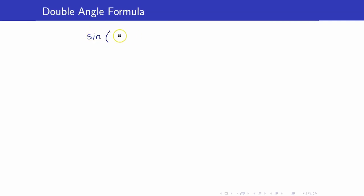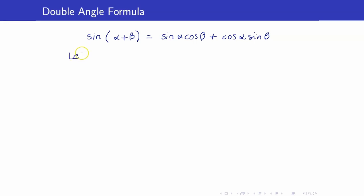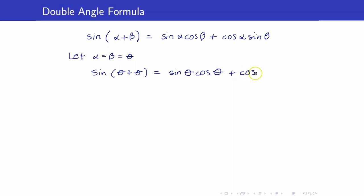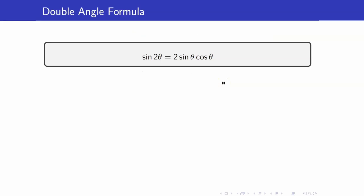Let us first recall our sum and difference identities for sine. Sine of alpha plus beta equals sine alpha cosine beta plus cosine alpha sine beta. Now, if we set alpha and beta to be equal to theta, then this becomes sine theta plus theta equals sine theta cosine theta plus cosine theta sine theta. This is sine of 2 theta, and since the two terms are the same, this simplifies to 2 sine theta cosine theta. And we have our first double angle identity for sine.